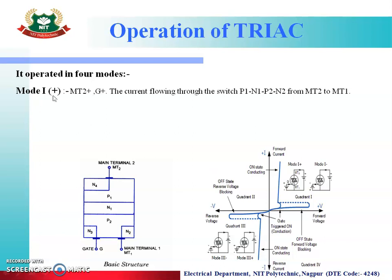The first one is mode 1 positive. In this mode, MT2 is positive and gate is positive. If MT2 is positive, then MT1 will become negative. So the current will flow from MT2 to MT1 — that is, the current will flow through the path P1, N1, P2, N2, from MT2 to MT1.